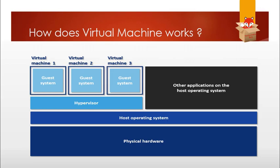On the bottom layer you have the physical hardware — the CPU, RAM, and all the physical components that you can touch with your hands. Above that is your host operating system. Then there is a hypervisor, and then guest systems — multiple virtual machines running together. And on the other side, you can see other applications on the host operating system.